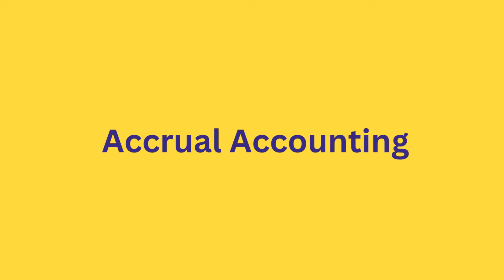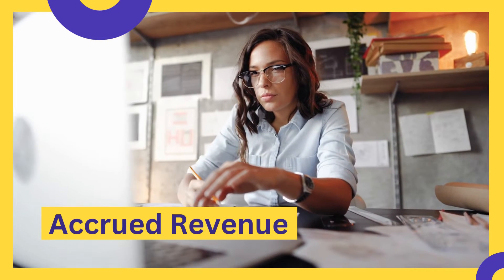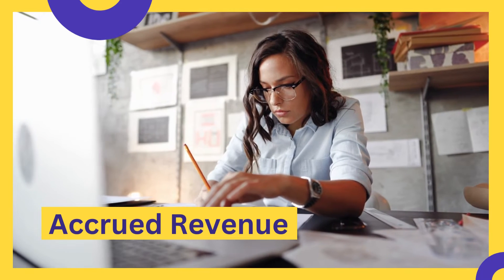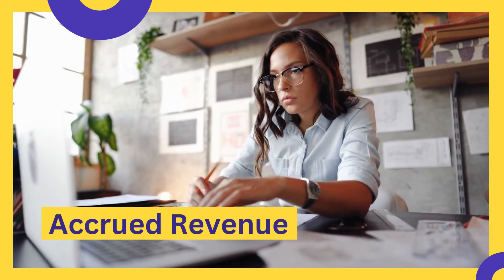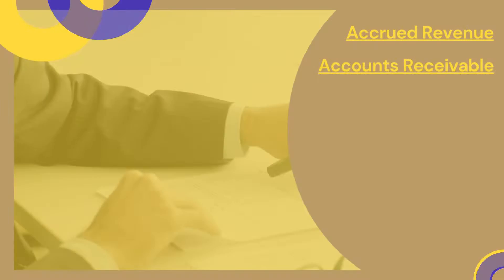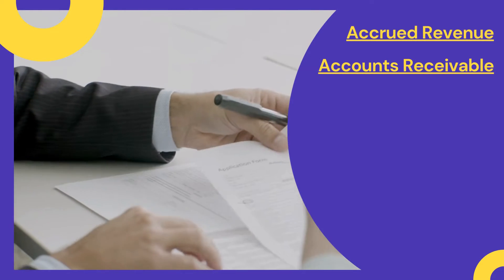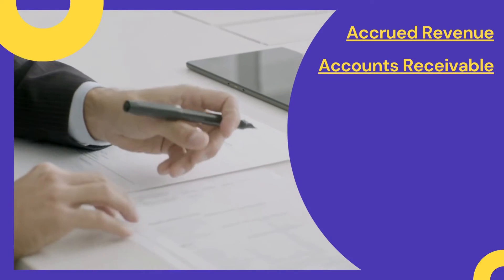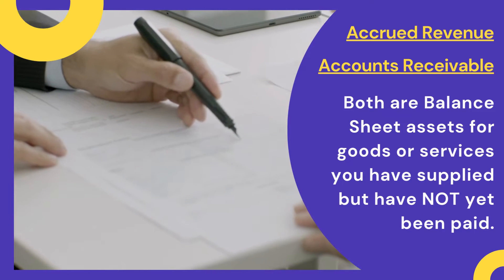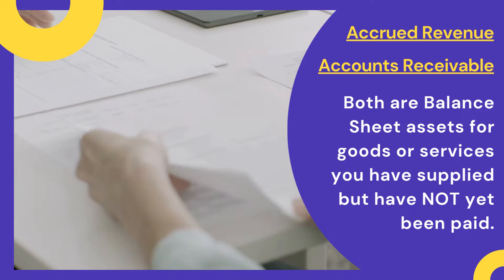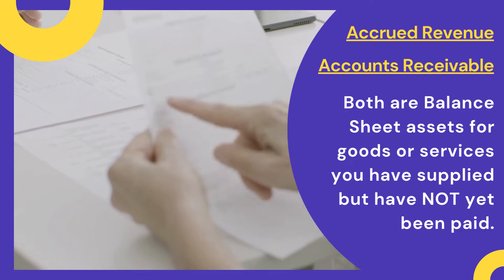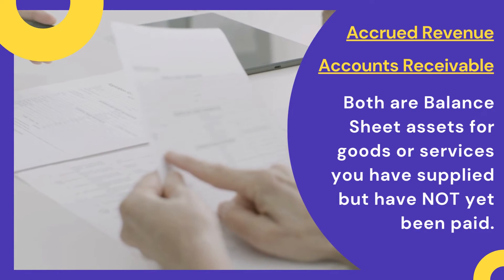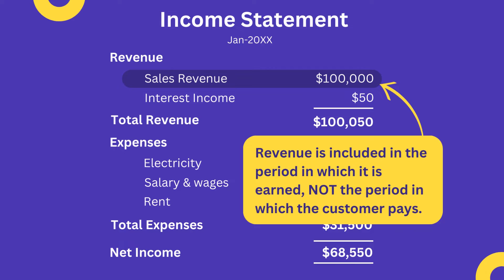Happy with that explanation, you then turn your attention to Accrued Revenue. You'd like to know what it is and how it's different from Accounts Receivable. Your accountant starts by telling you that they are fairly similar to each other, because they are both assets on the balance sheet that represent goods or services you have supplied to customers for which they have not yet paid. Another similarity is that the revenue is included on the income statement in the period in which it is earned, instead of the period in which the customer pays.